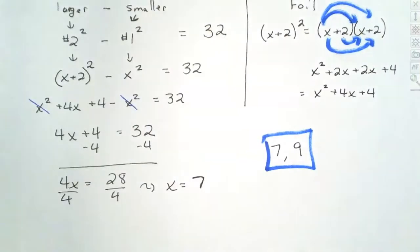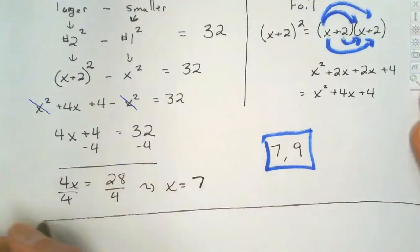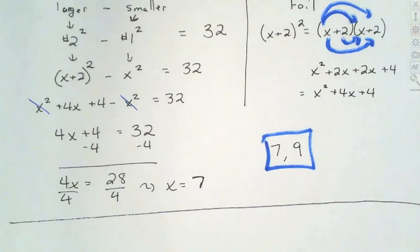Negatives are not going to work, and the problem specifically tells us the numbers have to be positive consecutive odd integers, so we don't have to work with negatives at all. That's a little bit about consecutive integer problems. Now we're going to look at some geometric figure problems.